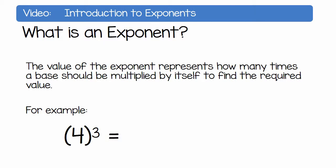4 to the exponent 3 means you would multiply 4 times 4 times 4. That's 4 multiplied by itself 3 times.